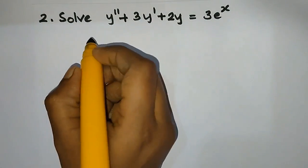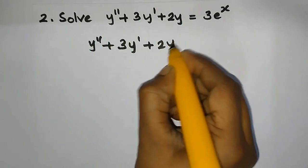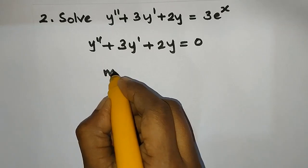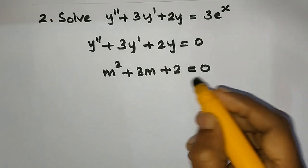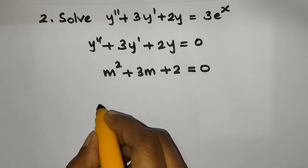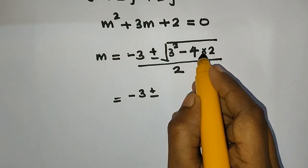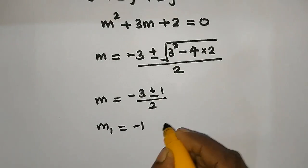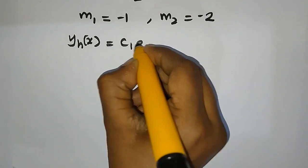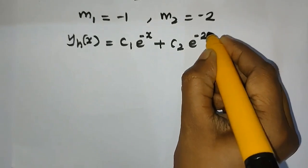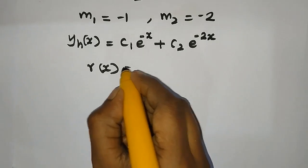Now the next question: y'' plus 3y' plus 2y equals 3e^x. The homogeneous equation is y'' plus 3y' plus 2y equal to 0. The characteristic equation is m² plus 3m plus 2 equals 0, giving m1 equal to minus 1 and m2 equal to minus 2. So yh equals c1·e^(minus x) plus c2·e^(minus 2x).